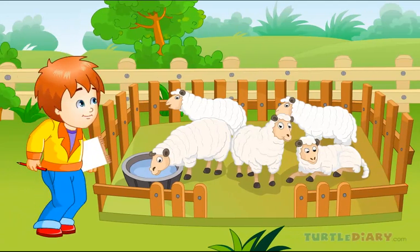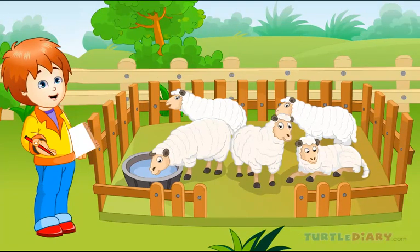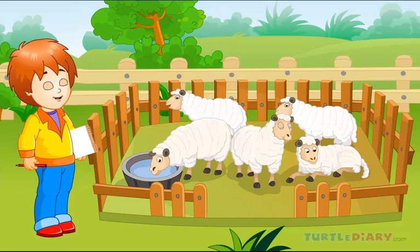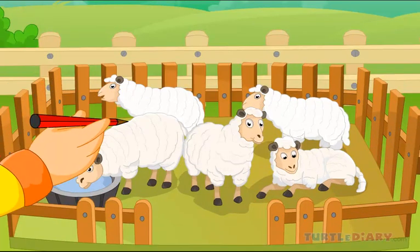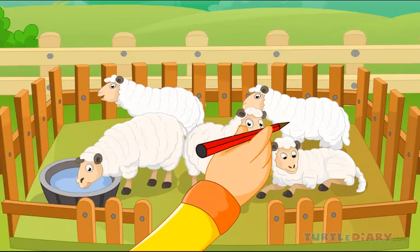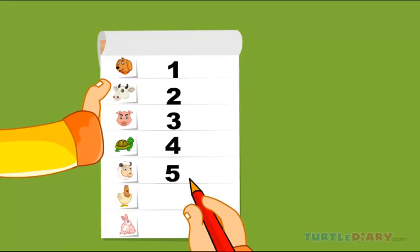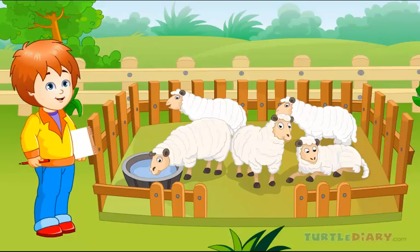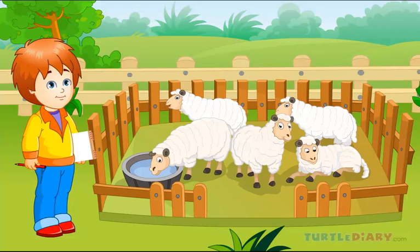Here are some white sheep in a barn. Can you count them for Adam? One, two, three, four, and five. There are five sheep in Adam's farm. Can you guess what will be next?